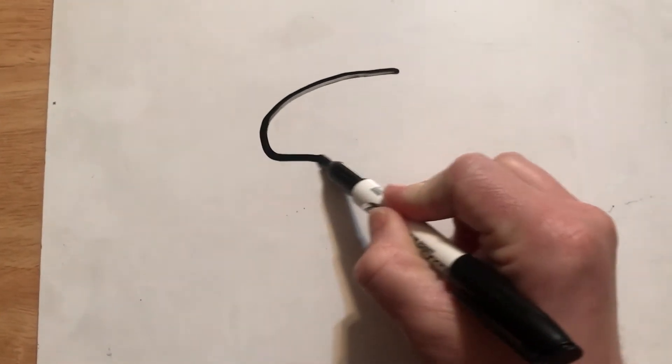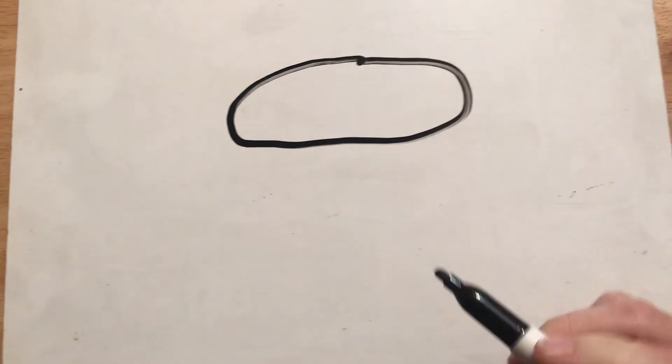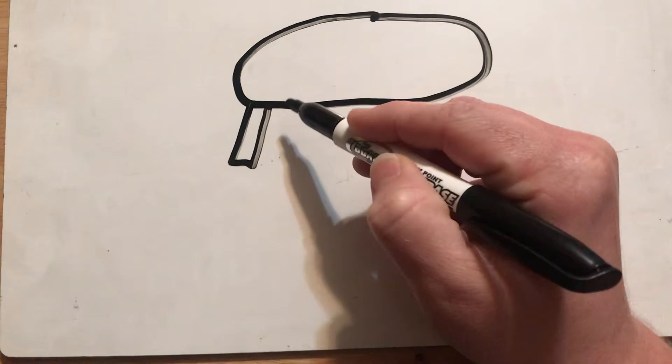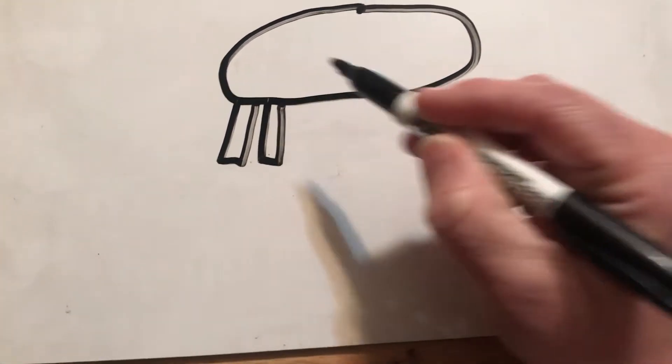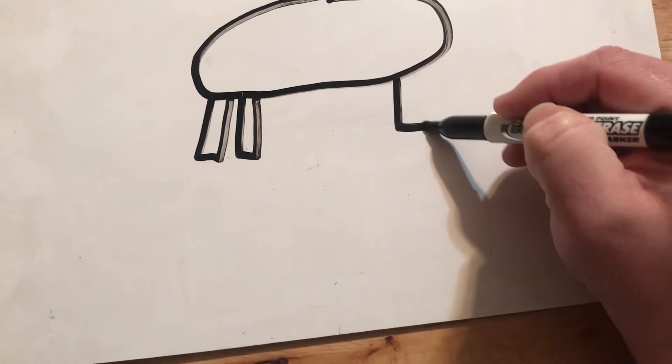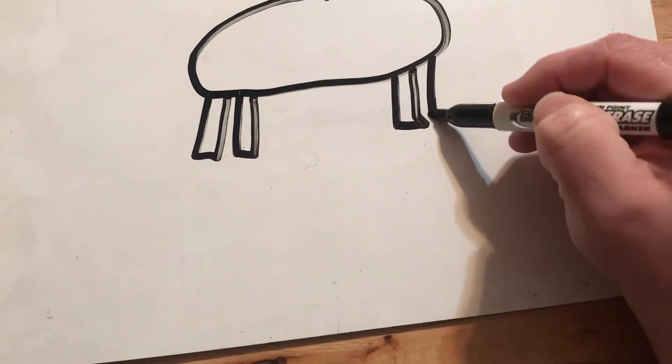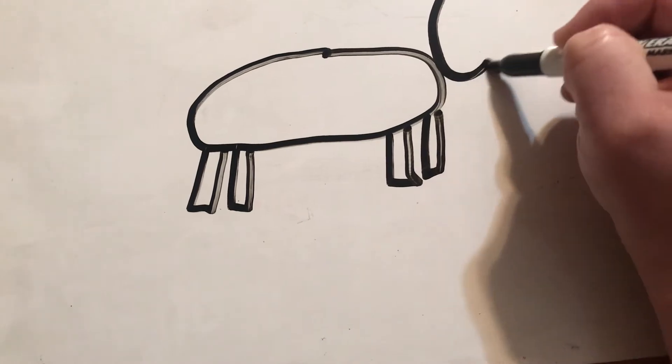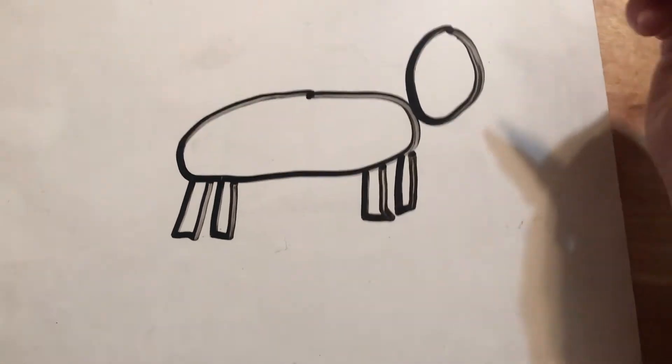Today's small group activity is going to be drawing an animal with different shapes. We're going to start off with an oval as the body, rectangle legs, a circle for the head.